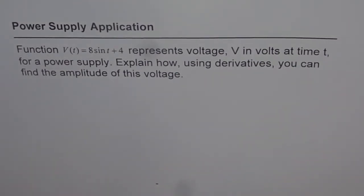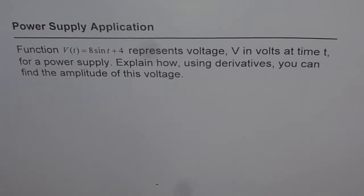Power supply application. The function V(t) = 8sin(t) + 4 represents voltage V in volts at time t for a power supply. Explain how using derivatives you can find the amplitude of this voltage.